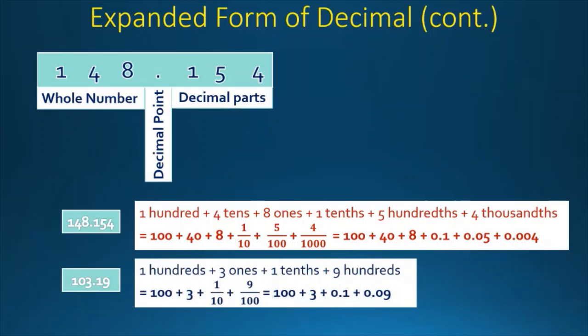Now let's take another example: 103.19. This is equal to 100 plus 3 ones plus 1 tenth plus 9 hundredths. So it equals 100 plus 3 plus 1 by 10 plus 9 by 100, which is 100 plus 3 plus 0.10 plus 0.09.